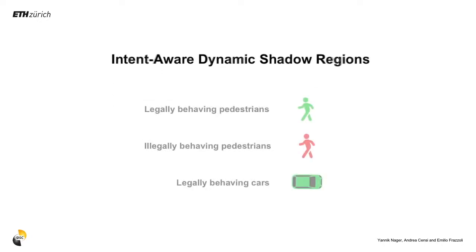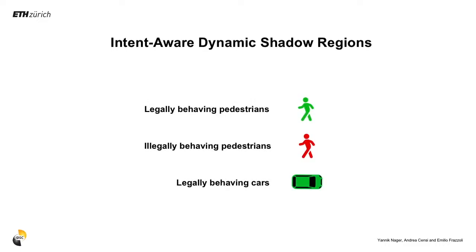Let's consider three different classes of agents: namely law-abiding pedestrians that only cross roads at crosswalks, law-breaking jaywalkers that might cross the road anywhere, and legally behaving cars which correctly follow their lanes.